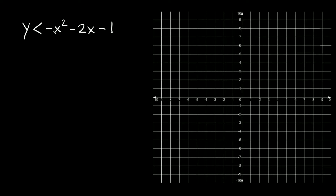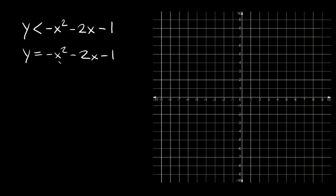So here we have y is less than negative x squared minus 2x minus 1. The first step here is changing your inequality symbol to an equal sign — it doesn't matter what inequality symbol this is, just change it to an equal sign. So this is going to be y is equal to negative x squared minus 2x minus 1. Now we're just going to graph this.